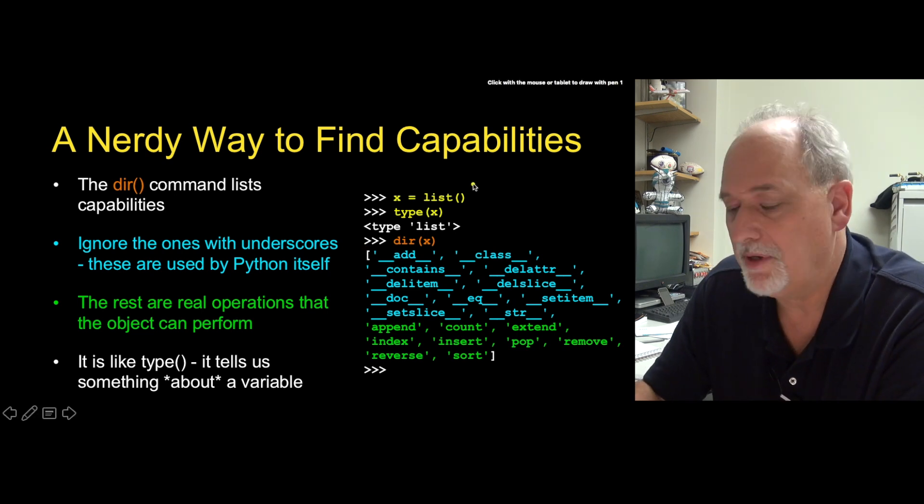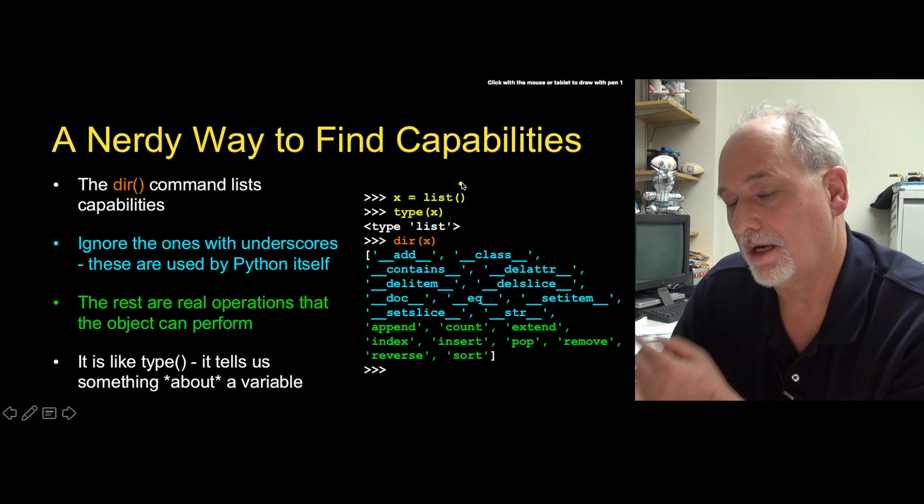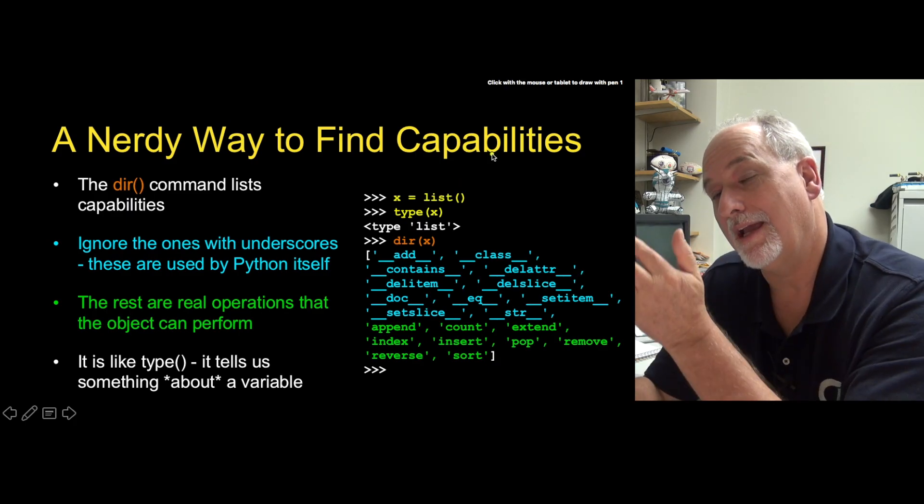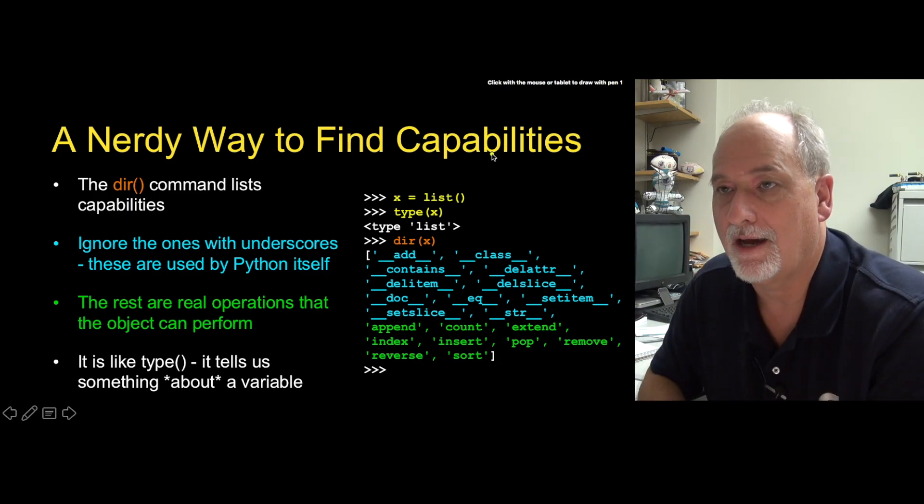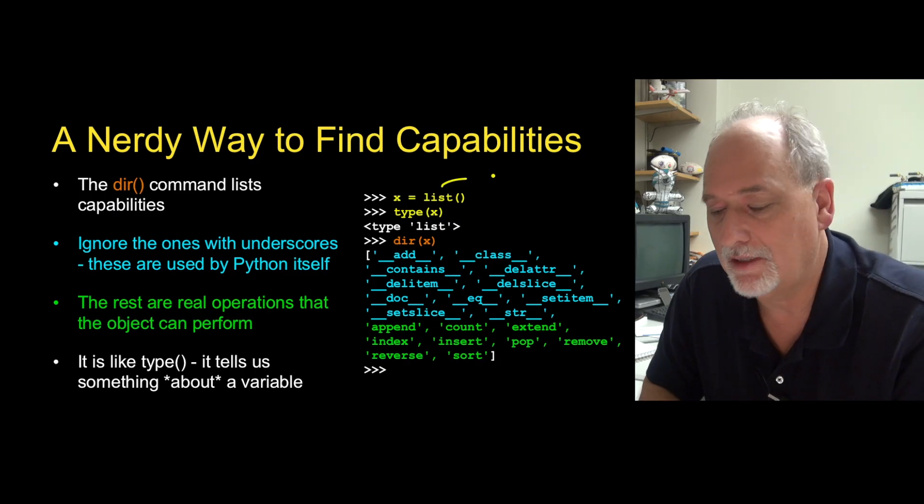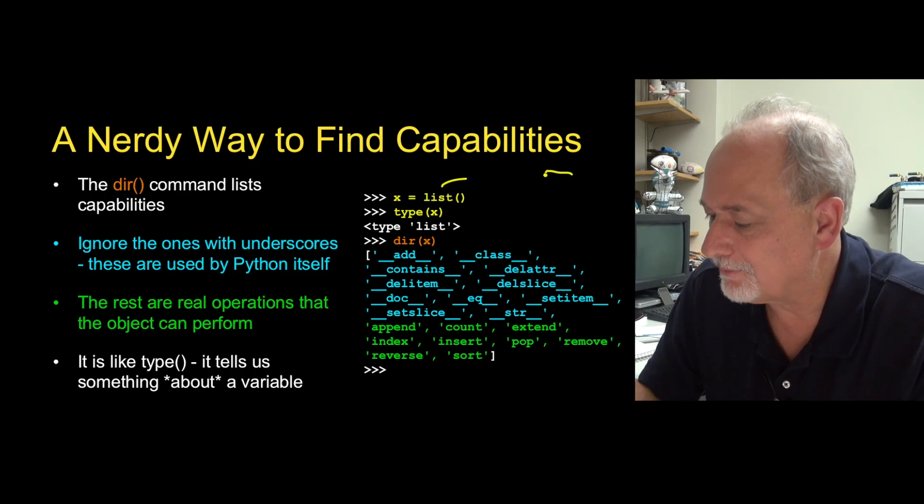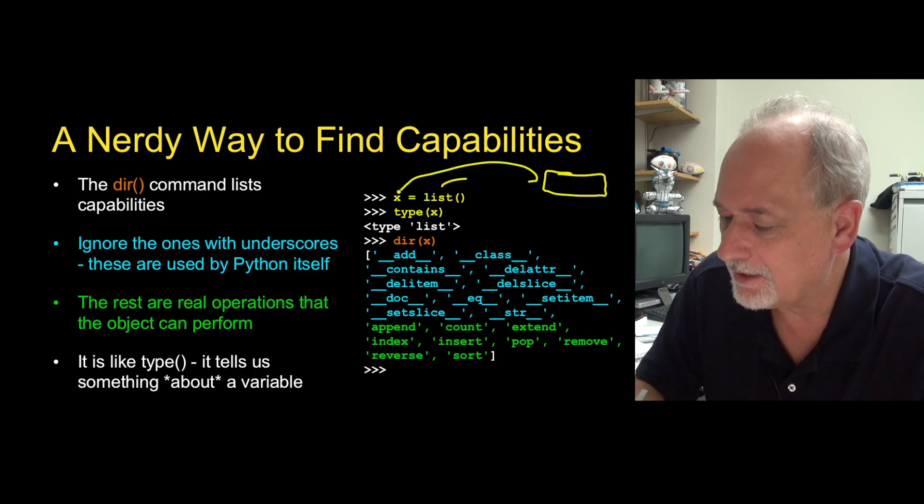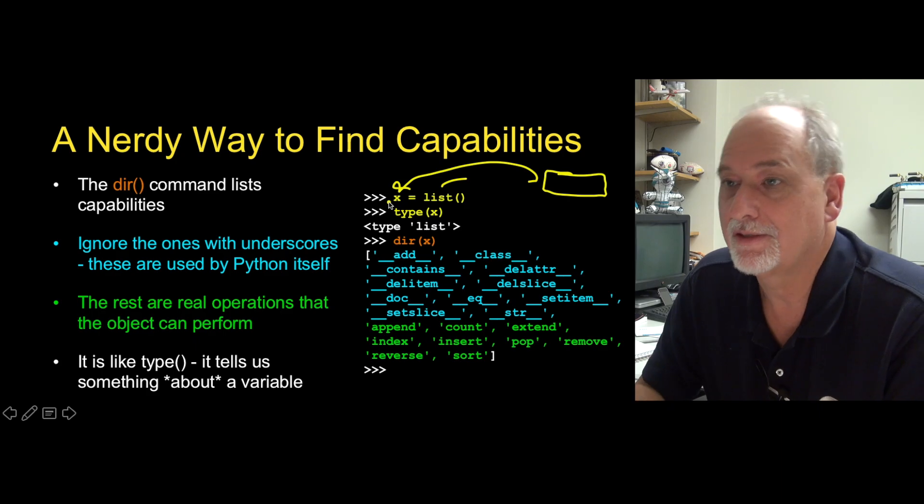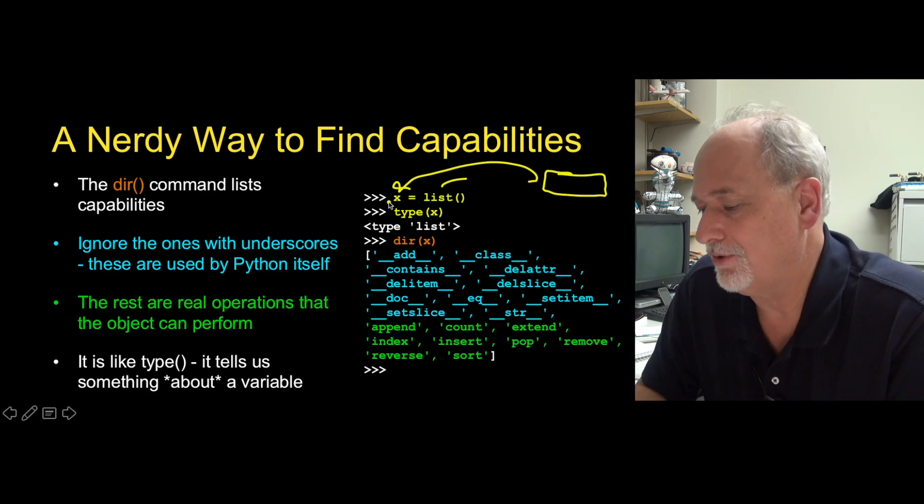This code here says, hey, make me an empty list. Well, it turns out that what we're saying is there is already a list class inside of Python. And we're constructing an empty list. And when we get back this empty list, we're assigning that into x. So x, in a sense, contains or points to an empty list.